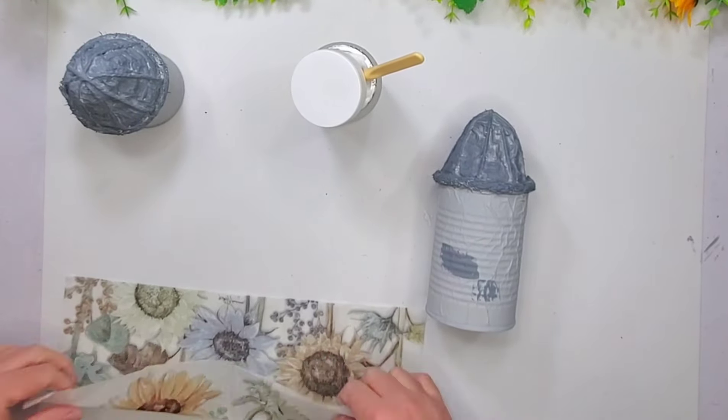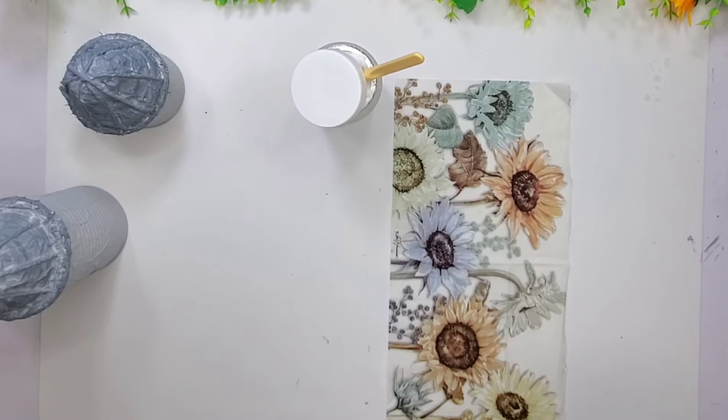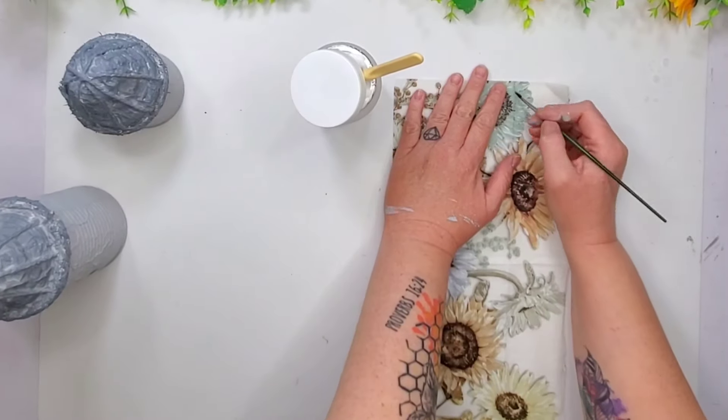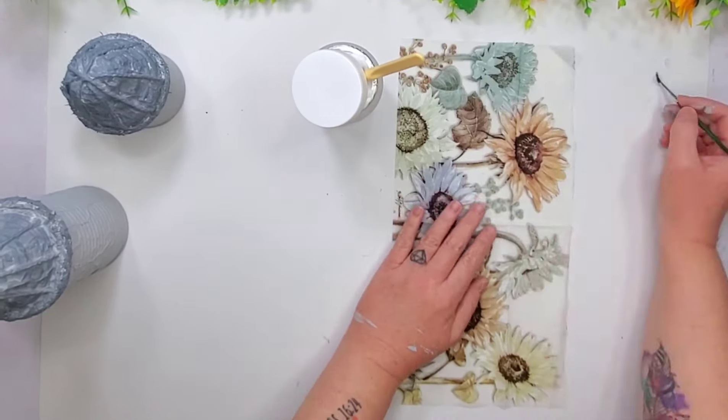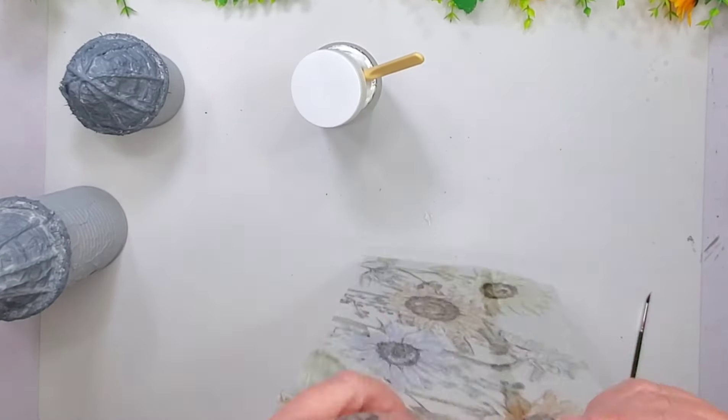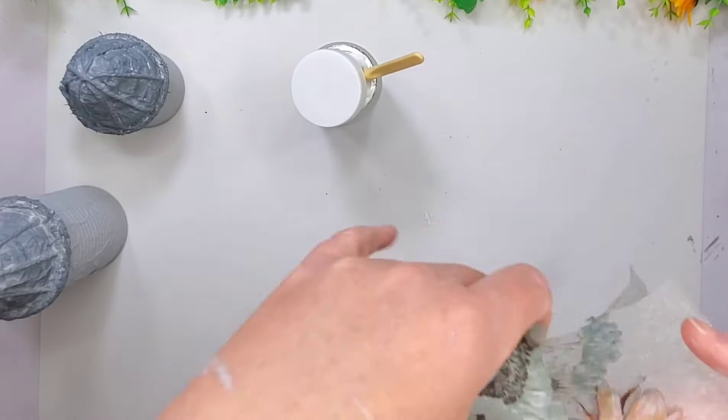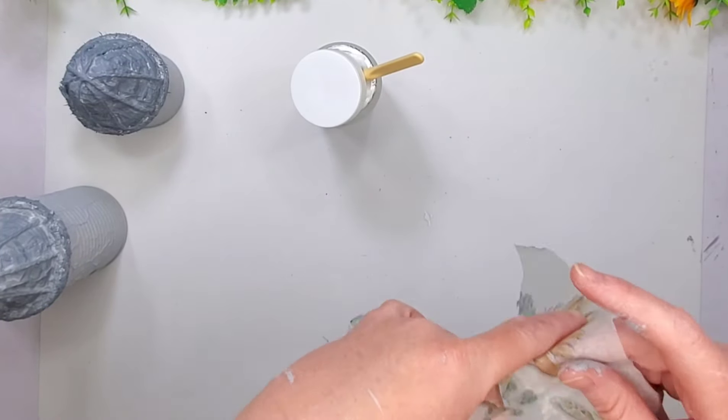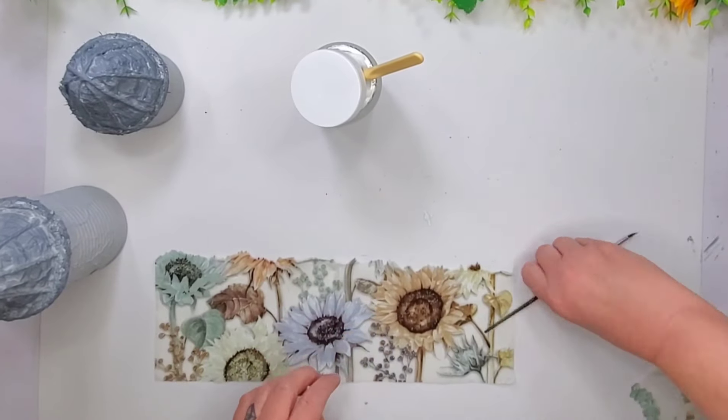So I had this gray Waverly paint. I didn't like it. It looked like it was like a glue, like had dried up. I've had it for a while. So I'm just going to mix up my own gray here. I'm just using some white and some black apple barrel paint, or I use the white chalk paint and then black apple barrel paint.